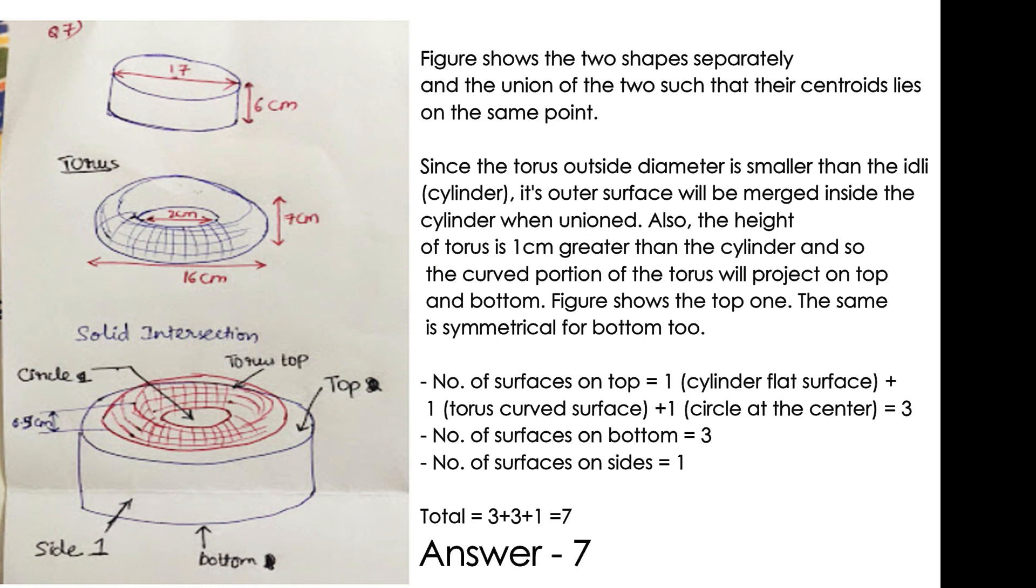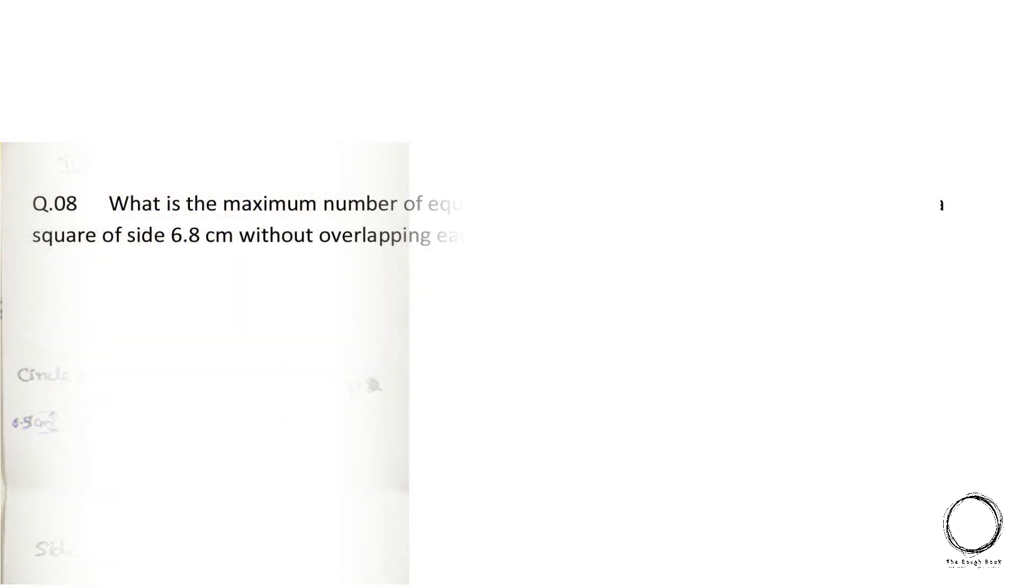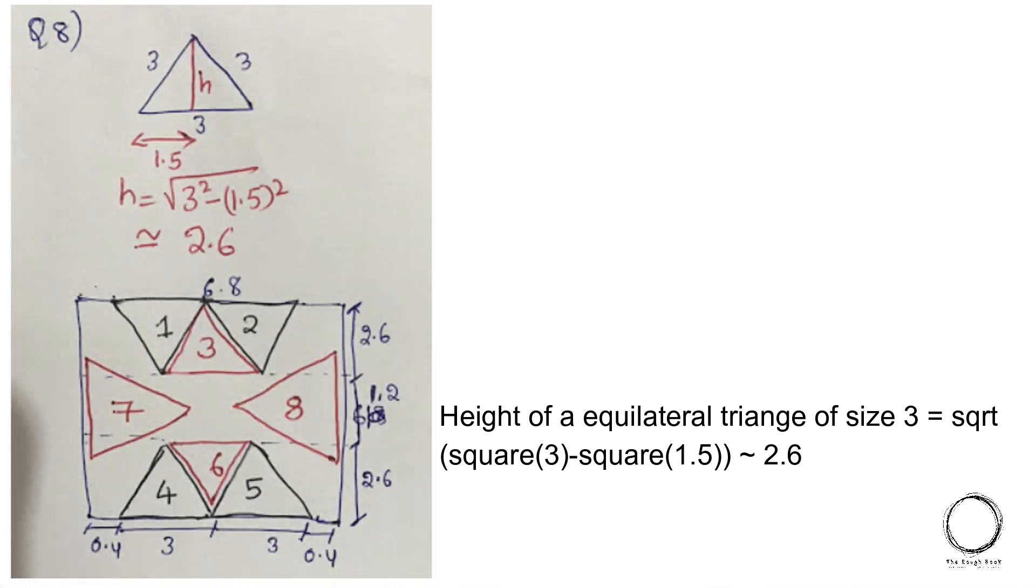What is the maximum number of equilateral triangles side 3 cm that can be placed in a square of side 6.5 cm without overlapping each other? Height of the equilateral triangle of size 3 equals to square root of 3 square minus 1.5 square which equals to 2.6. So the below image shows the arrangement of triangles and with this arrangement the triangles fitted in the square are 8, hence the right answer is 8.